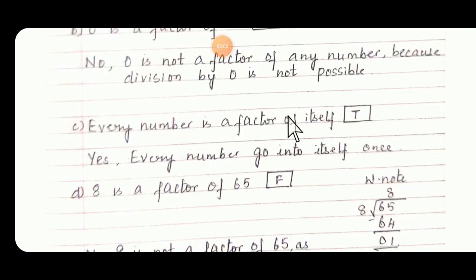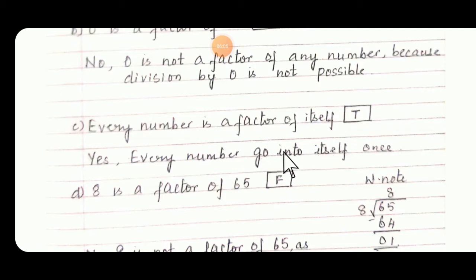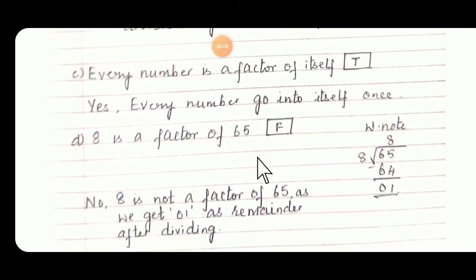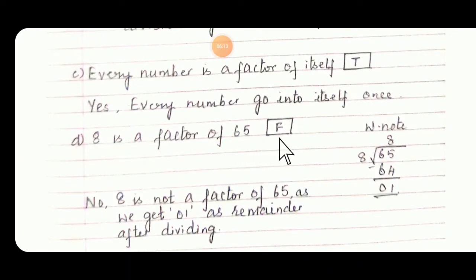Every number is a factor of itself — True. Yes, every number goes into itself once. D: 8 is a factor of 65 — No. We don't have 65 in table 8; we have 64. So 65 is false.